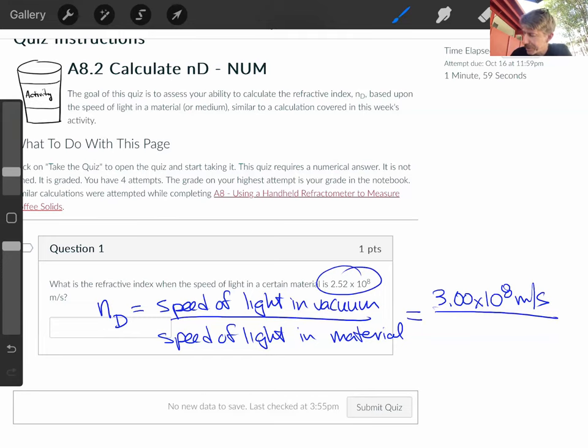We said in this particular problem it's 2.52 times 10 to the eighth meters per second. And so we can calculate the refractive index as 3.00 times 10^8 divided by 2.52 times 10^8. And I get 1.19.